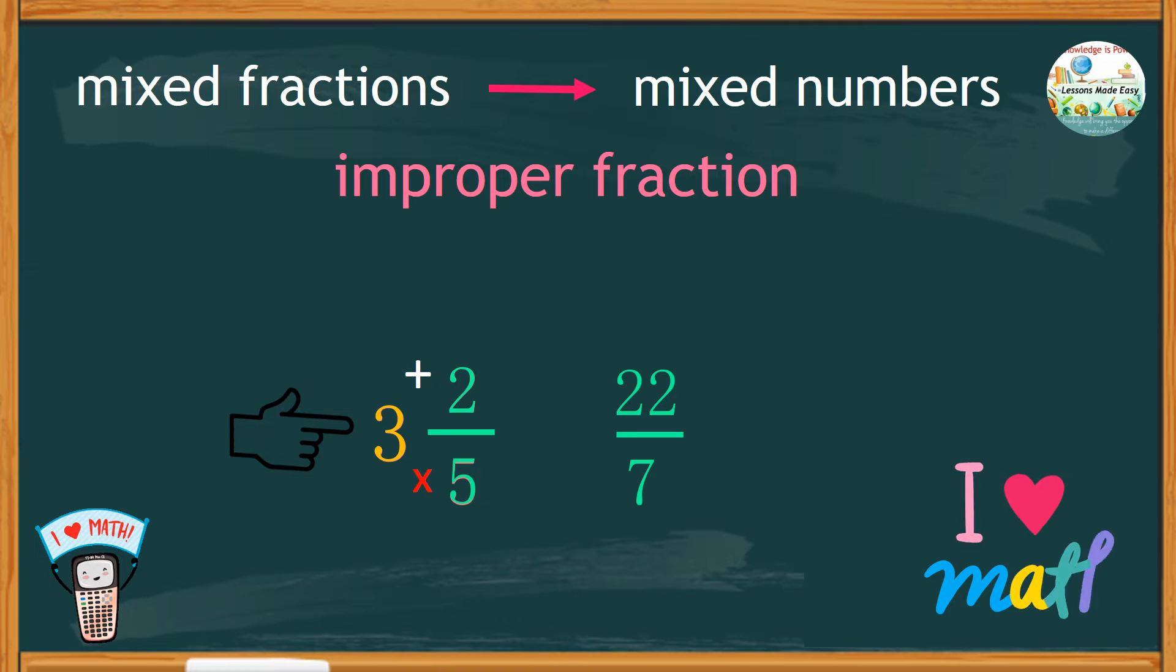And all together, we get a total of 17. Use this number as the numerator and keep the same denominator, that is 5. We now have 17 over 5.